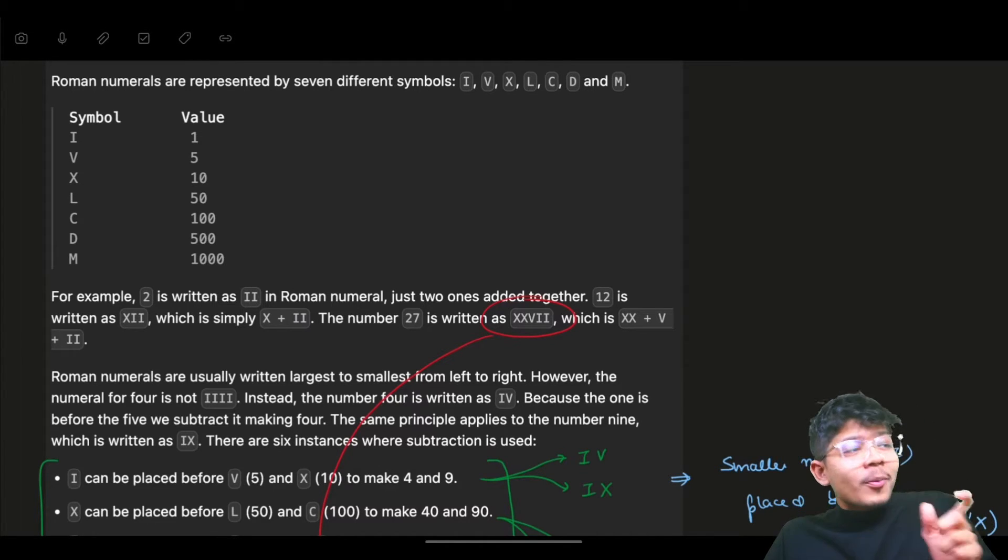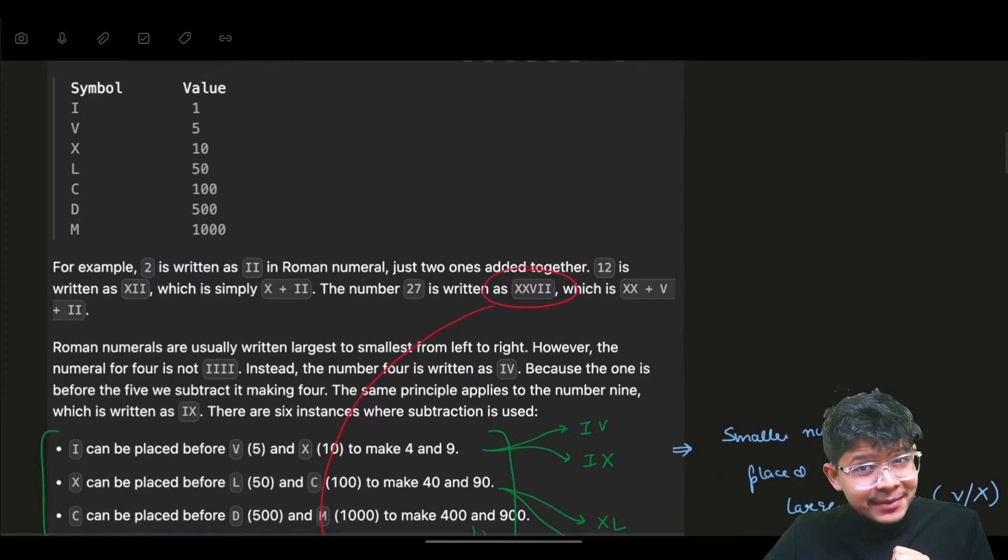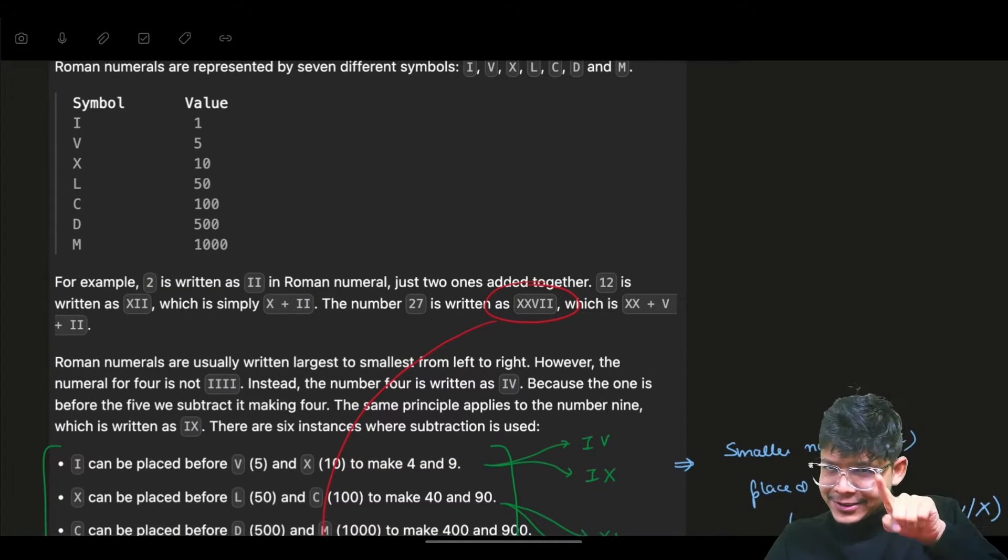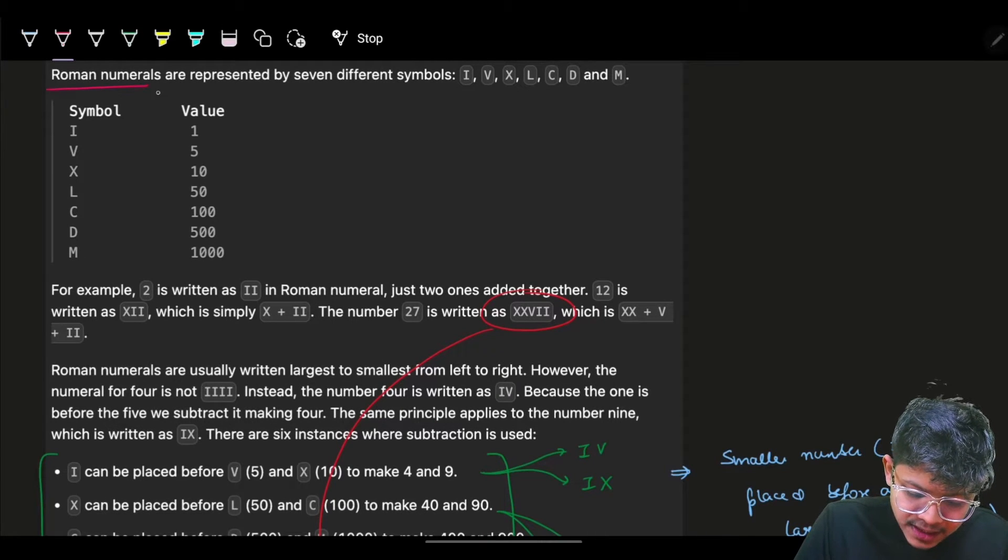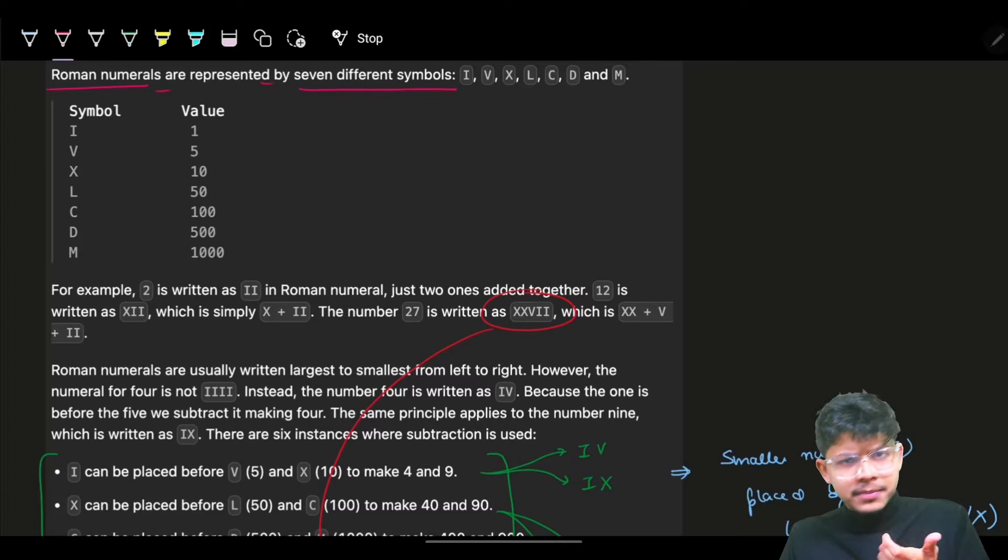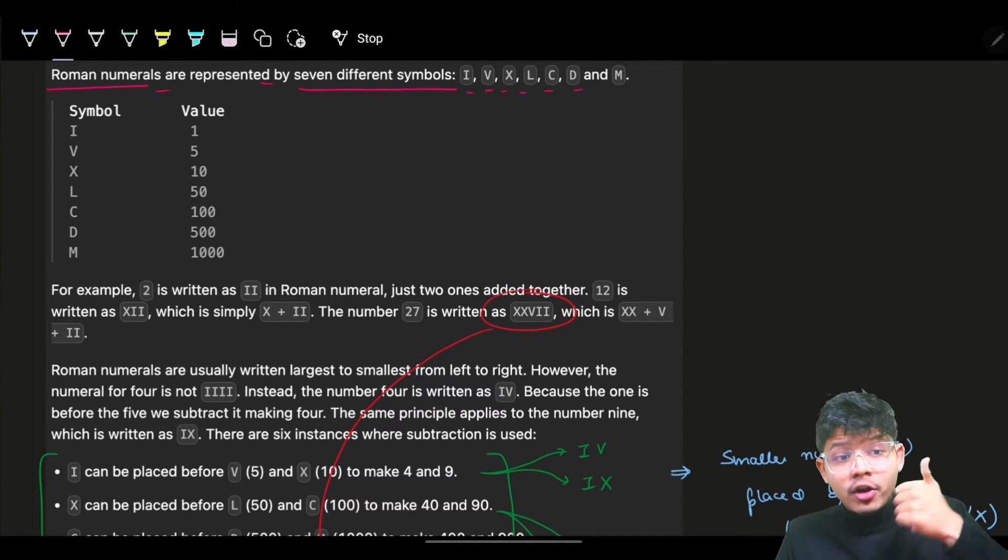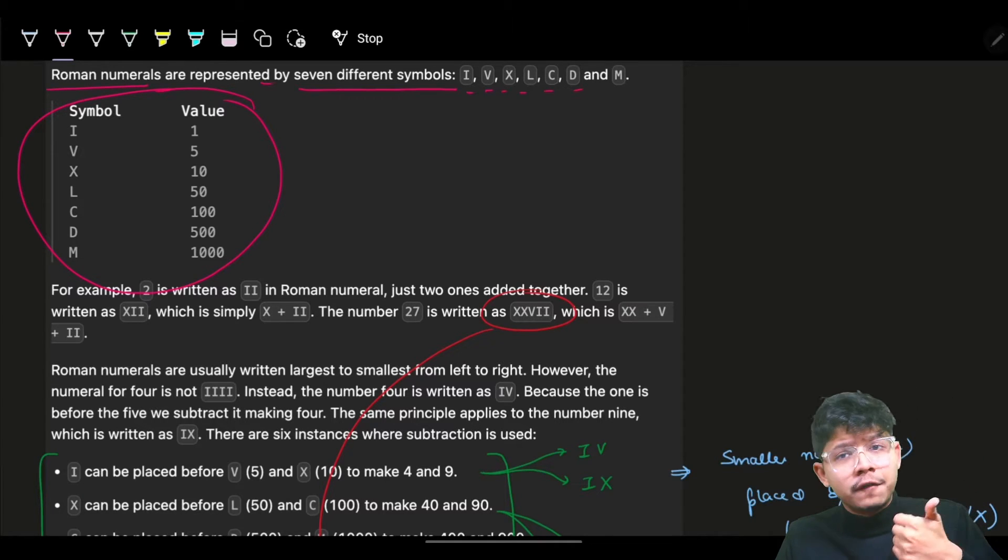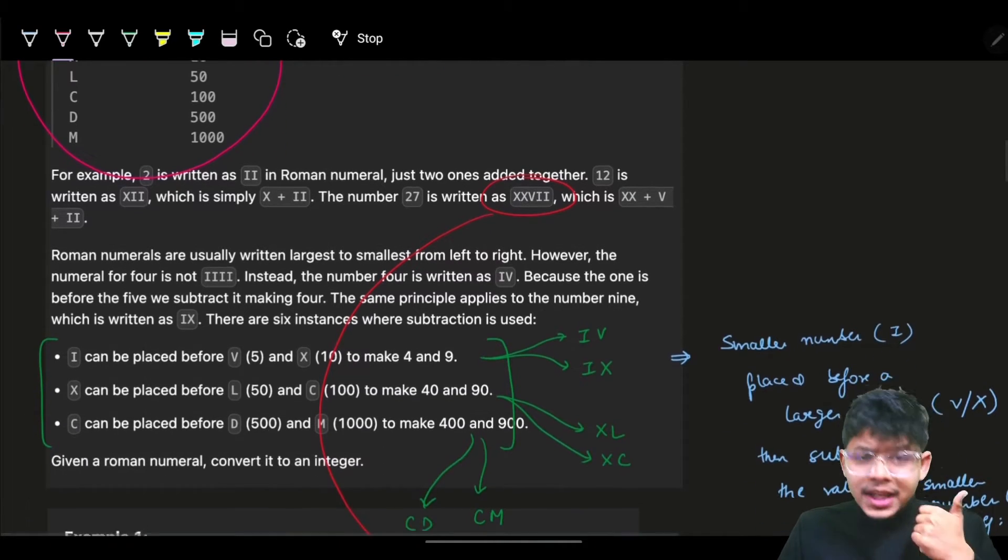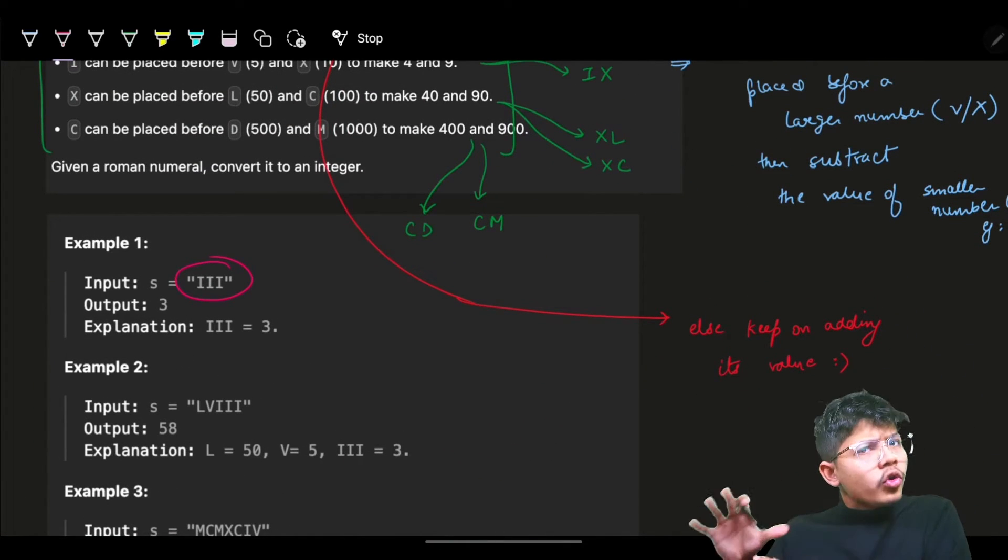In this video we have a problem, Roman to Integer. The question says that you have Roman numerals and they're represented by seven different symbols: I, V, X, L, C, D, and M. Corresponding to every one, we know what the value is.